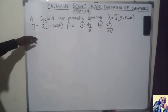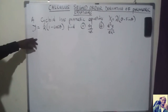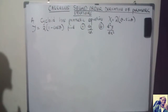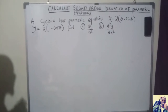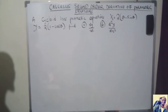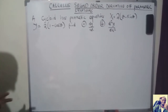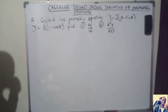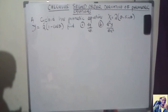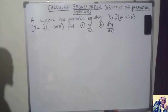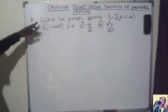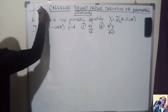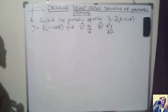We are going to use parametric differentiation because we have y and x presented in terms of a third parameter, theta. Parametric equations normally represent different curves. One of them is a cycloid — a cycloid moves like this, so this curve is what we call a cycloid.